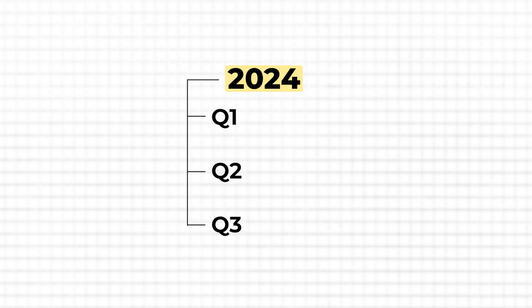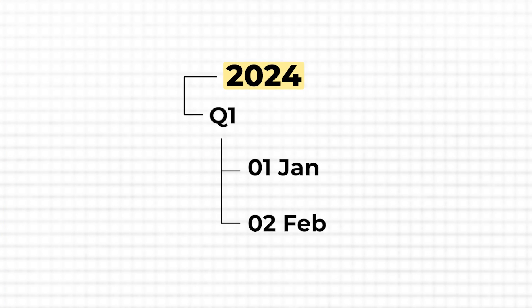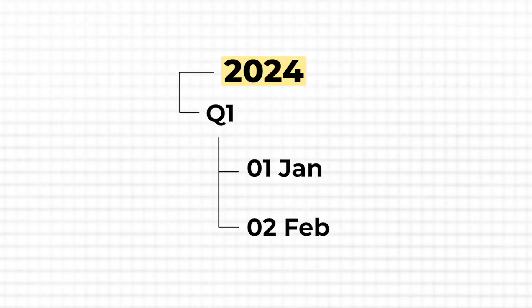Within each month or quarterly folder, you would then have sub-subfolders per event. For example, in December you would have a subfolder for Christmas or New Year's Eve. In case you have a bunch of photos that do not belong to a specific event but are just taken randomly across the month or year, I would recommend storing them in a folder labeled 'miscellaneous' or something like that.